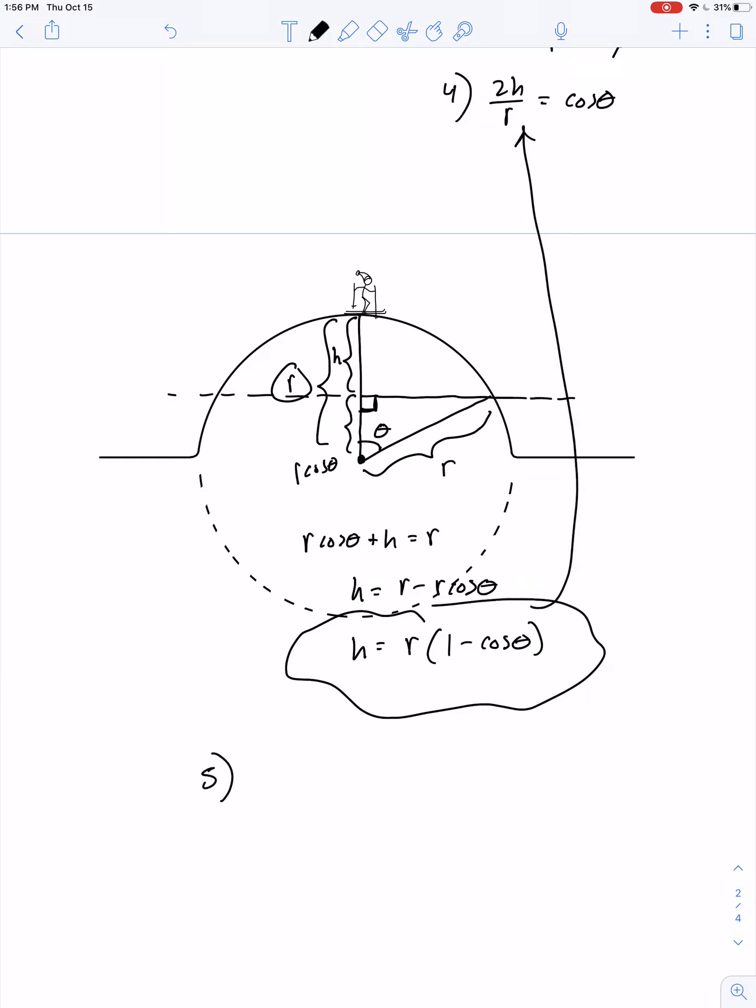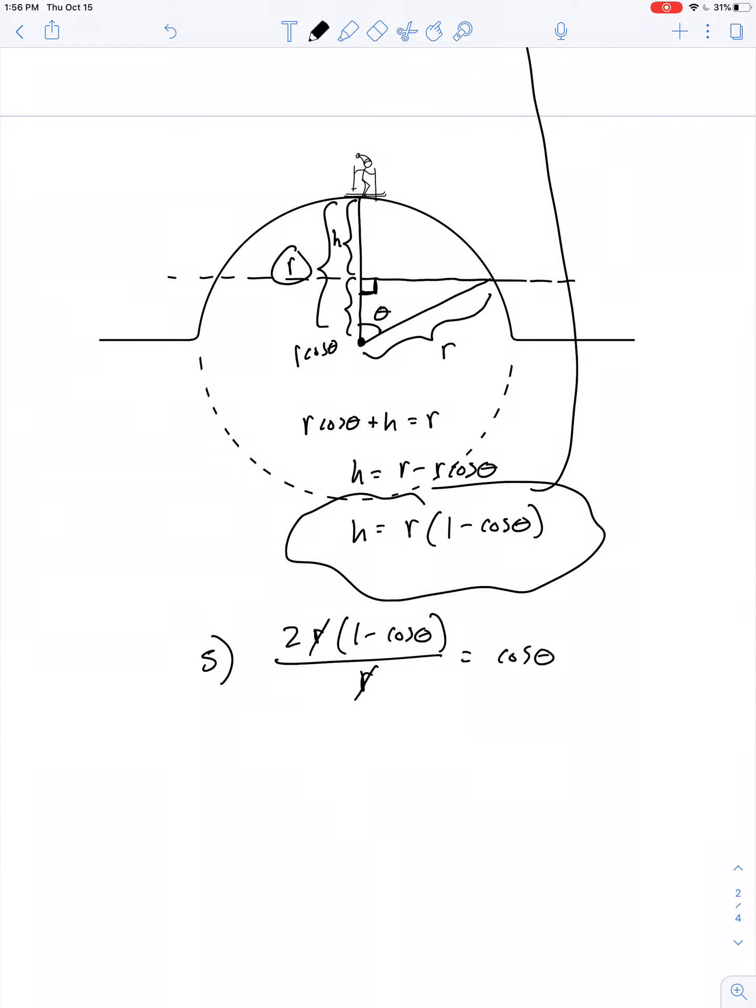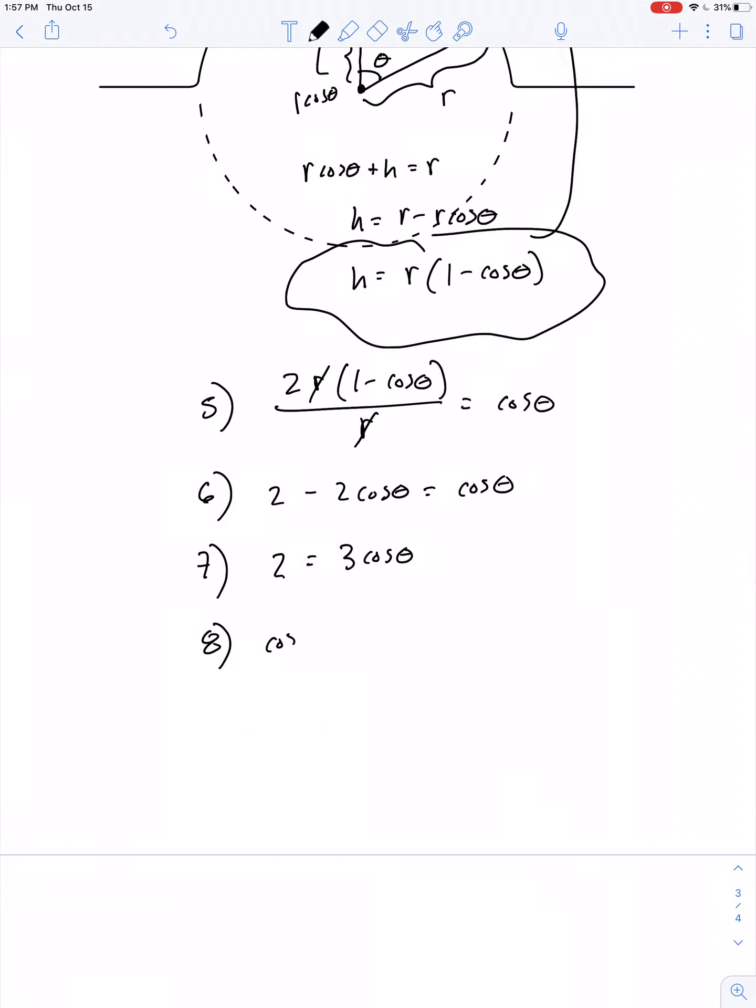In step 5 of our work, it says 2r times the quantity 1 minus cosine theta divided by r is equal to cosine theta. So the r cancels out. Well, let's distribute 2 minus 2 cosine theta is equal to cosine theta. Is that mathematically possible? Yeah, sure. Let's just add 2 cosine theta to both sides of the equation. 2 is equal to 3 cosine theta. So cosine theta is equal to 2 thirds.